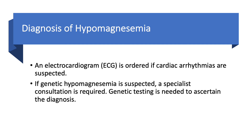We order an EKG if we are suspecting cardiac arrhythmias, because that requires immediate emergency treatment with intravenous magnesium sulfate and telemetry. If genetic hypomagnesemia is suspected — usually in children, as Bartter syndrome is mostly in children, though Gitelman syndrome can be seen in adults — you need to consult a specialist, usually a nephrologist interested in these disorders. To ascertain the diagnosis, you need genetic testing.